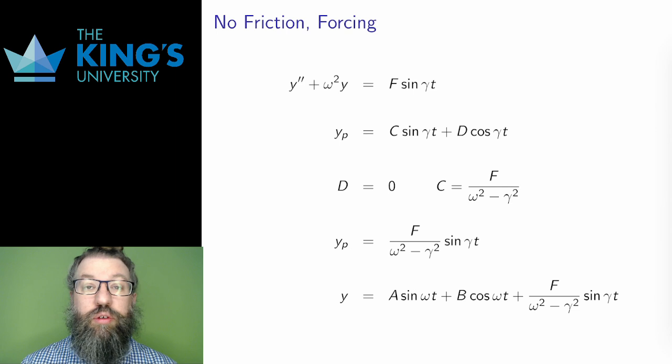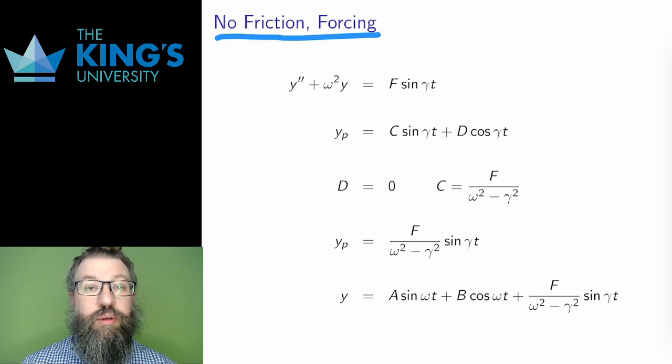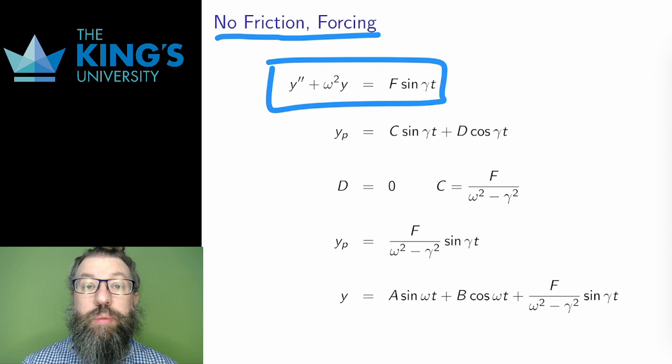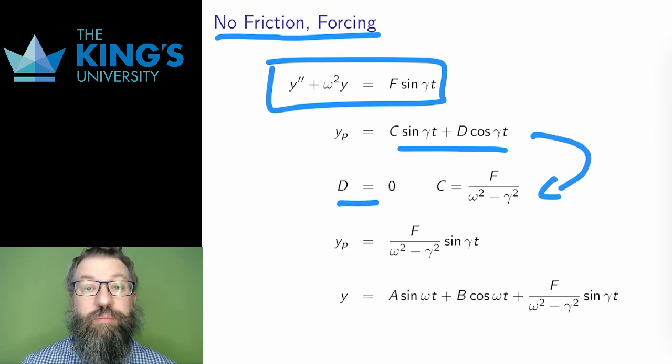If there is friction but still no forcing, then this is the DE. Still no forcing term, but a friction term. I can solve for the particular solution. I already have the homogeneous solutions from the previous slide. Using undetermined coefficients, I'll skip the details, but this is the form of the particular solution, and these are the coefficients that result from the system.